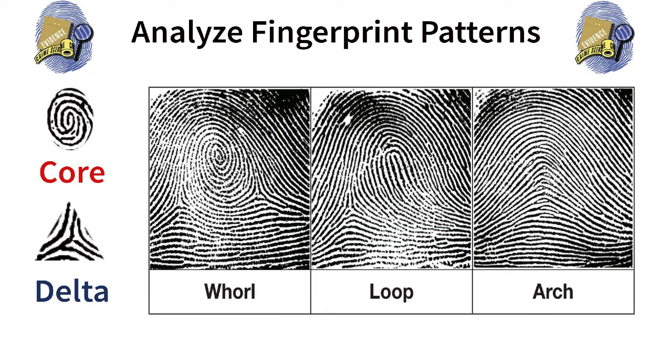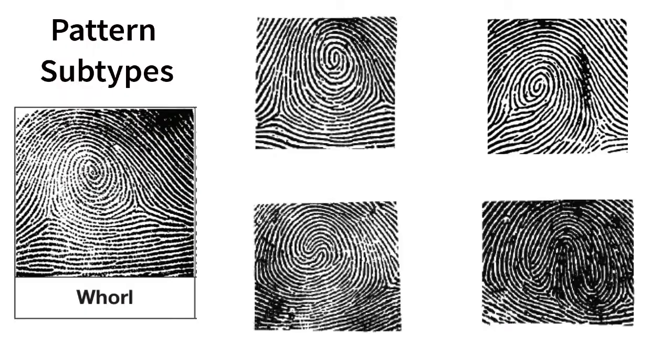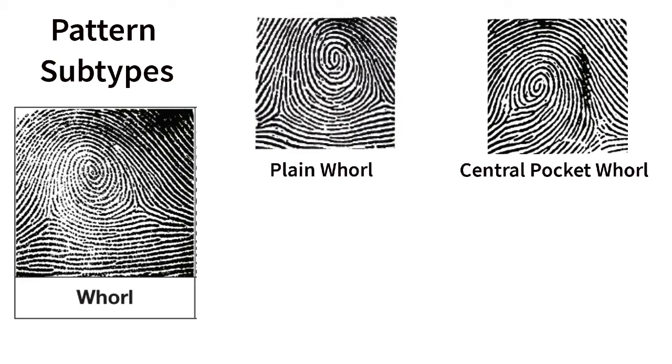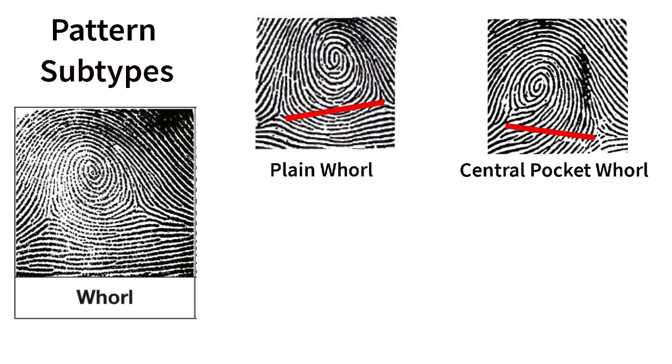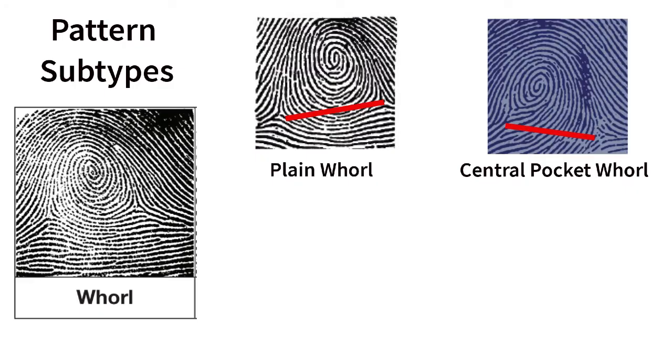Each of these three primary fingerprint patterns can be further analyzed by subtype. Whorls are made up of four subtype patterns. A whorl can be identified as being either a plain whorl or a central pocket whorl by drawing an imaginary line between the two deltas in a whorl. If a line between the deltas crosses the whorl, the whorl is a plain whorl. If a line between deltas does not cross through a whorl, the whorl is a central pocket whorl.